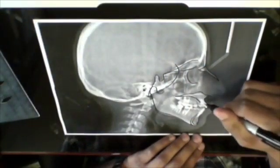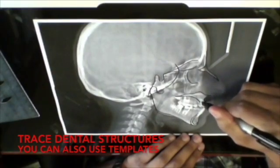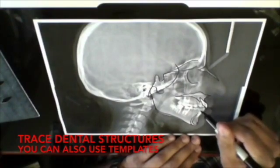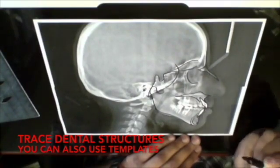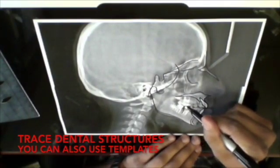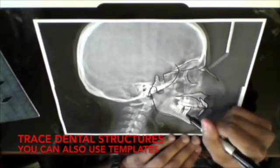Upper and lower incisors can also be traced, and then you want to also trace first molars, mandibular and maxillary first molars.